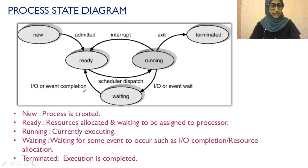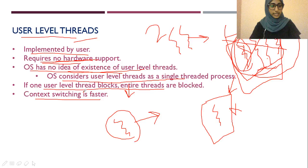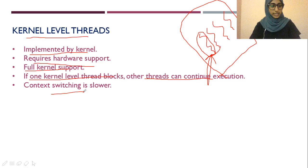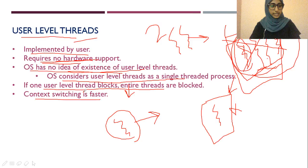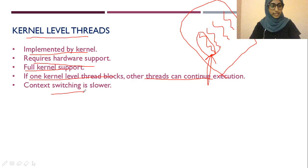To summarize thread types: user-level threads are implemented by the user, require no hardware support, OS does not know of their existence, blocking one blocks all, and context switching is faster. Kernel-level threads are implemented by the kernel, require hardware support, full kernel support is given, blocking one does not block others, and context switching is slower.